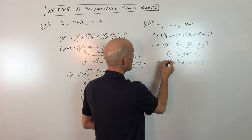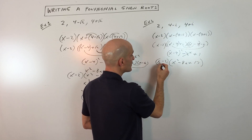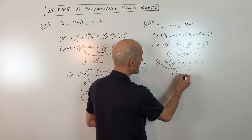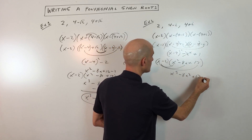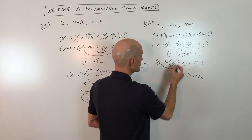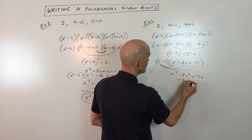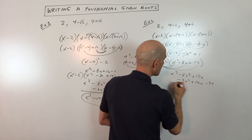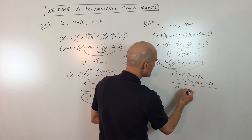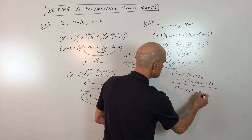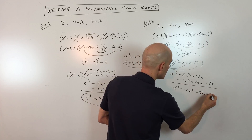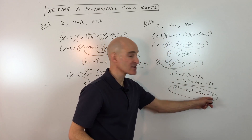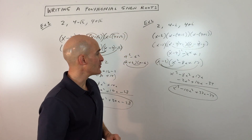Then we multiply by x minus 2, distributing the x and then distributing the negative 2. That gives us negative 2x squared plus 16x minus 34. Combining like terms gives us our final polynomial. You can see all the coefficients — the numbers in front of the variables — are real.